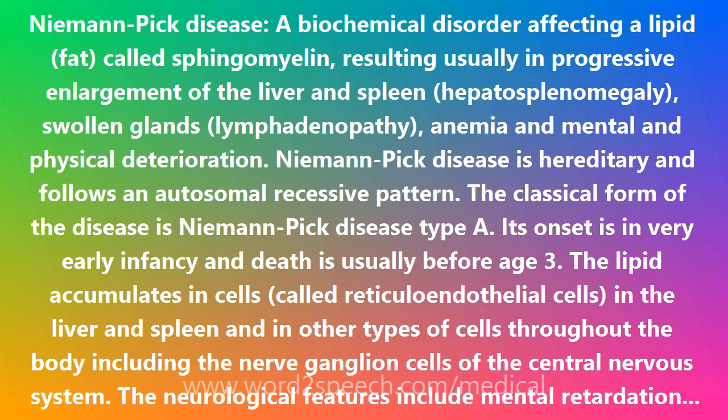Eye hallmarks of Niemann-Pick disease include the cherry red spot in the macula in the center of the retina, opacity of the cornea, and brown discoloration of the lens capsule. Respiratory problems include pulmonary infiltration. Coronary artery disease occurs early.